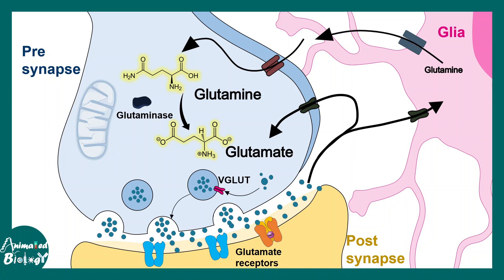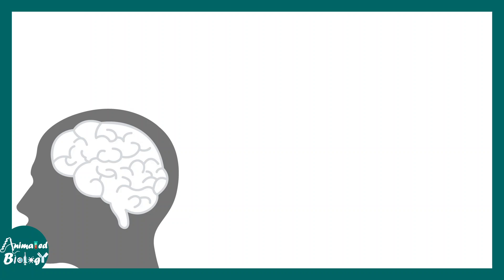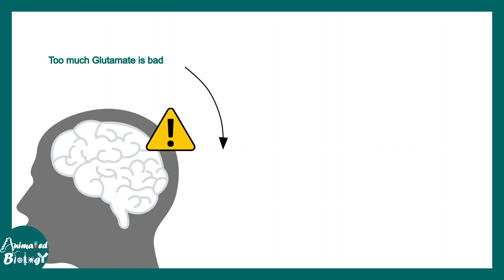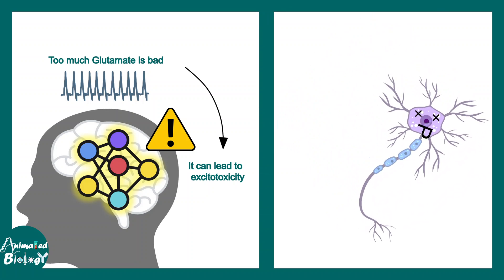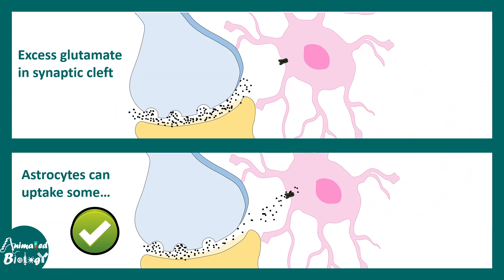When there is an excess amount of glutamate present in the synaptic cleft, there are excitatory amino acid transporters which can take up the excess glutamate — these transporters are present mostly in astrocytes. So astrocytes can mop up extra glutamate from the synaptic cleft. Once taken up, this glutamate can be converted into glutamine with the help of glutamine synthetase. This is really important because too much glutamate is bad for the neuron — it can lead to excitotoxicity and ultimately the death of neurons.